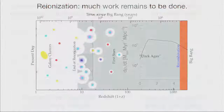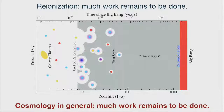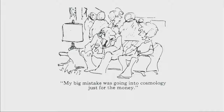Reionization — much work remains to be done. The assumption of instantaneous total homogeneous reionization is a huge fraud. Presumably you started to get bubbles of reionized gas around the first galaxies to form, which eventually merged to form a continuous intergalactic ionized medium. Cosmology in general has much work remaining to be done, and I encourage you in your future cosmological career to think about the many problems that will be mentioned in this two-week cosmology course. The one piece of information I want to leave you with: don't go into cosmology for the money — it just doesn't work out that way. Thank you very much.